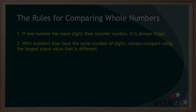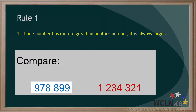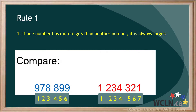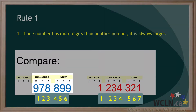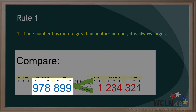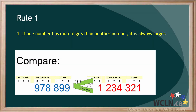Let's take a closer look at the first rule. Here are two whole numbers — count the number of digits in each. The first number has six digits, and the second number has seven digits. Therefore, the first number is less than the second number. The first number has digits to the hundred thousands place, but the second number goes all the way to millions. The alligator's mouth will be open toward the second number.